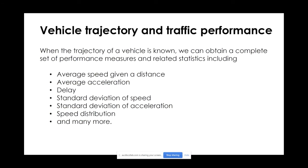Next, I'd like to move to the relationship between vehicle trajectories and traffic performance. When the trajectory of a vehicle is known, we can obtain a range of performance measures. Vehicle trajectory data is a very rich dataset — it is the foundation of traffic flow theory. You can calculate instantaneous speed, average speed, acceleration, delays, speed distribution, standard deviation of speed, standard deviation of acceleration, and jerk. It's the richest data set we can have for traffic analysis.